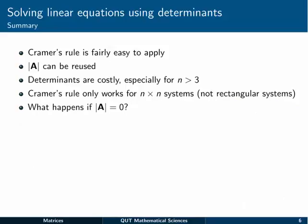Okay, so that's pretty much it for Cramer's rule. Cramer's rule is fairly easy to apply as long as you can calculate determinants. It's got a little efficiency in there because we reuse the determinant of A over and over again. But actually calculating determinants is quite costly. So you saw how long that took for a 3 by 3 system.